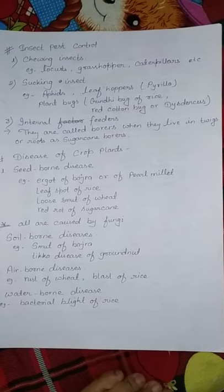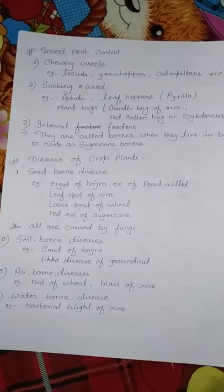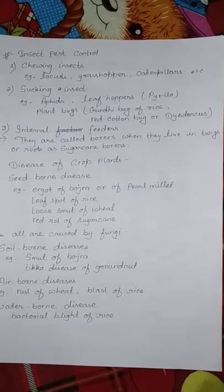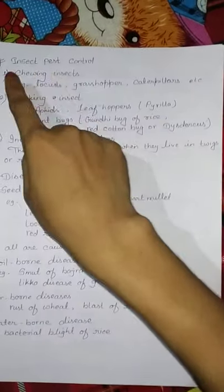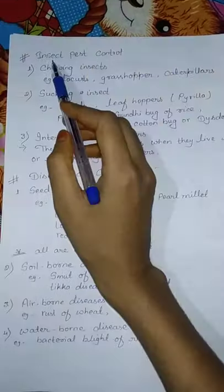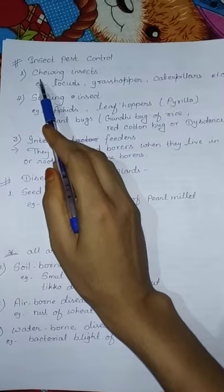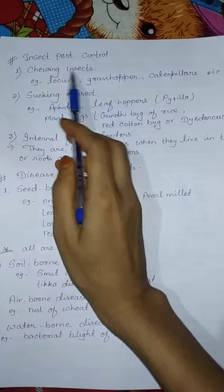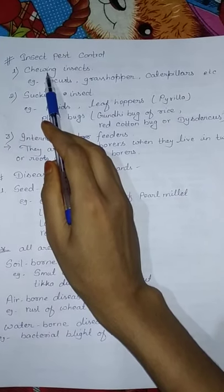Hello students, good morning. In the previous lecture we discussed weed control methods, and today we will discuss insect pest control. The first type is chewing insects, which means insects that chew plants.